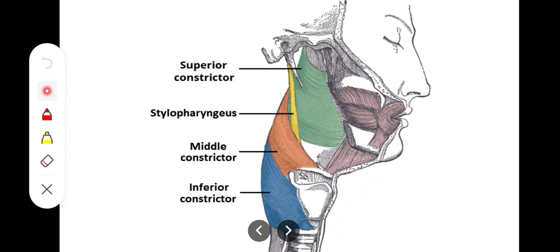We have the superior, middle, and inferior constrictor muscles of the pharynx. For understanding, these muscles originate from the hyoid bone, its lesser or greater cornua, and the stylohyoid ligament. These three muscles — superior, middle, and inferior constrictor — meet posteriorly at the pharyngeal raphae, which is a midline structure. The fascia covering the superior constrictor muscle as well as the buccinator muscle is called the buccopharyngeal fascia, and it is one of the layers of the deep cervical fascia.